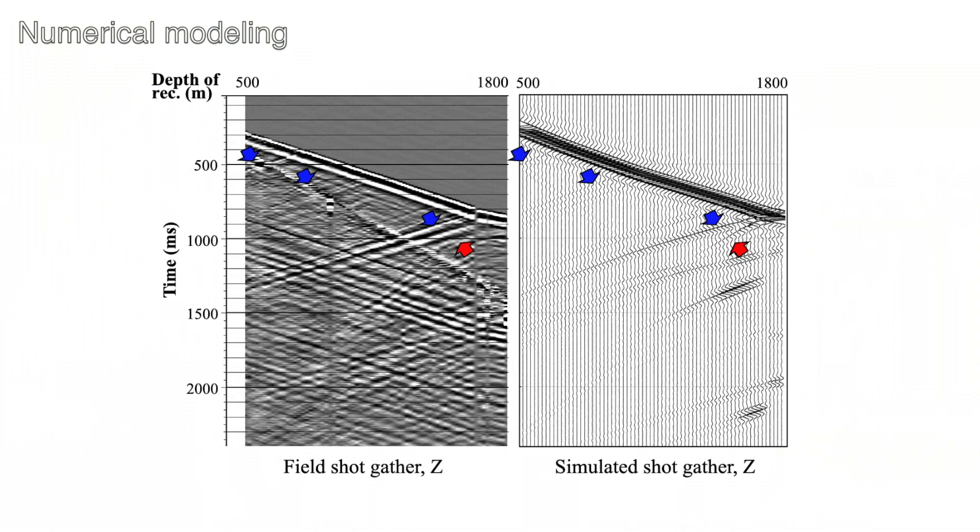Examples of near offset shots are shown along with the actual field shot gathers. At well A, the simulated near offset shot gather has the main reflectors match very well with the field records. The blue arrows mark the P wave reflections, while the red arrows mark the converted shear wave reflections at the top of the basement. The main differences between the simulated and field records is the tube wave which comes after the direct arrivals at a slower velocity. It was not simulated and it will be removed as noise in the field record before imaging.